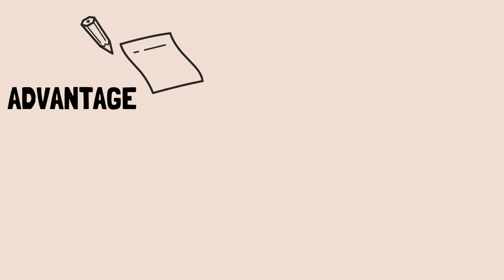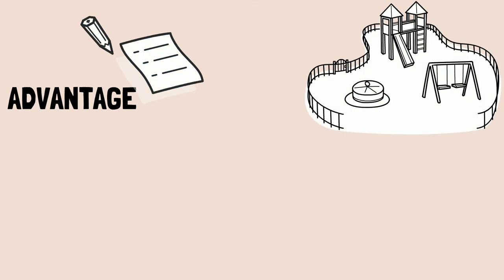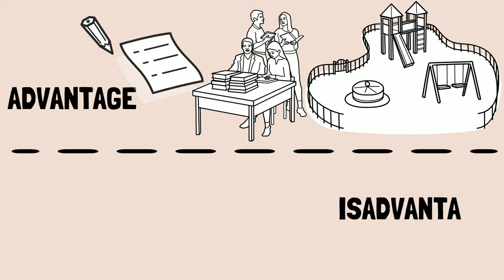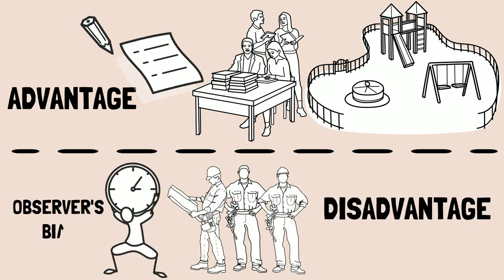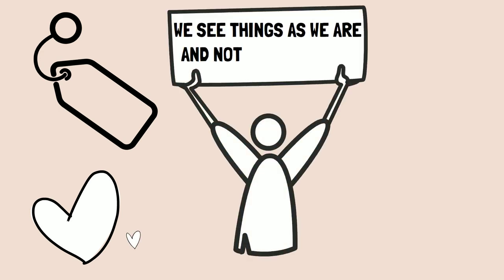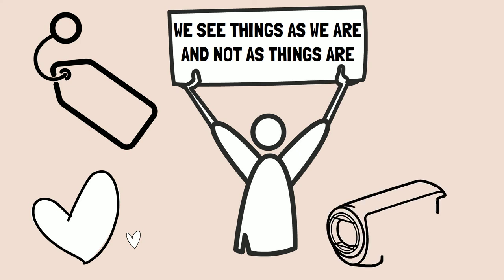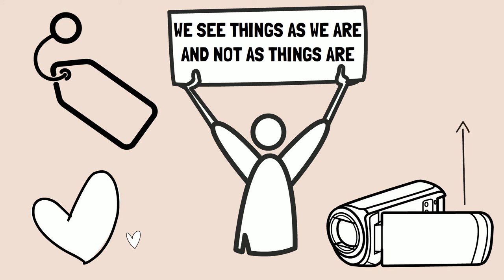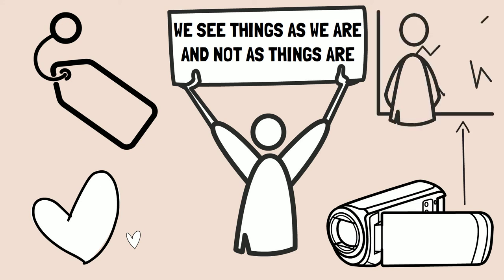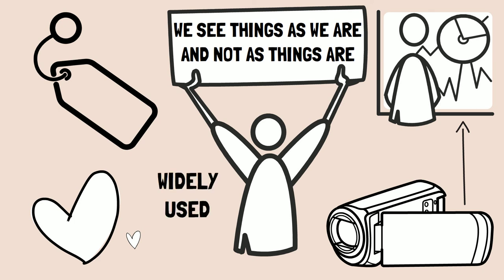The advantage of the observation method is that it enables the researcher to study people and their behavior in a naturalistic situation as it occurs. However, the observation method is labor-intensive, time-consuming, and is susceptible to observer's bias. Our observation is influenced by our values and beliefs about the person or the event that we are observing. We see things as we are and not as things are. Because of our biases, we may interpret some things in a different way than what the participant may actually mean. Therefore, the observer should record the behavior as it happens and should not interpret the behavior at the time of observation itself. Despite these shortcomings, the observation method is widely used in research in psychology.